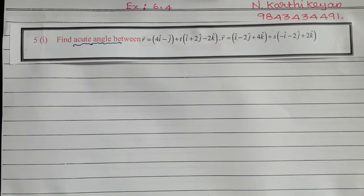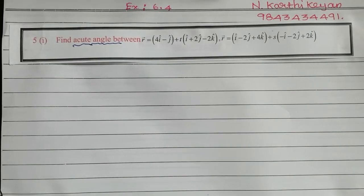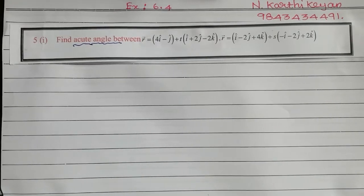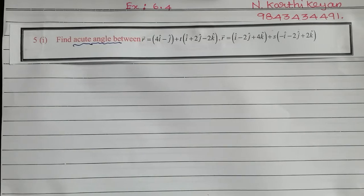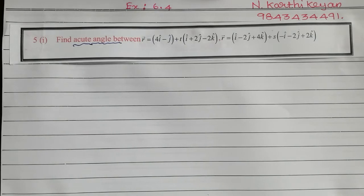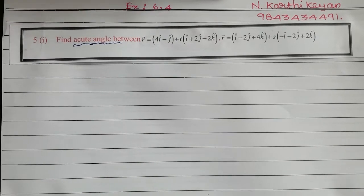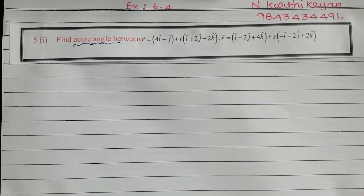Number one: r vector equals 4i cap minus j cap plus t into i cap plus 2j cap minus 2k cap. The other line: r vector equals i cap minus 2j cap plus 4k cap plus s into minus i cap minus 2j cap plus 2k cap.